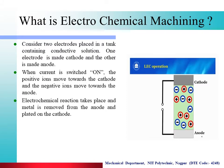An electrochemical reaction takes place and metal is removed from the anode and plated on the cathode. Here, electrochemical reaction occurs and metal is removed from the anode in the form of ions and deposited on the cathode. This process is known as electroplating, which we have studied in the chemistry subject.